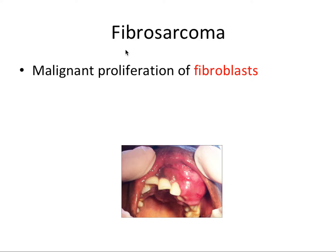So first, we have fibrosarcoma, and this is the malignant proliferation of fibroblasts. You'll notice that a lot of these connective tissue tumors, or lumps and bumps as I call them, look kind of similar, just on a spectrum of severity, some being smaller and some being larger. I'm not going to include pictures for all these lesions for that reason, but the most important thing to know for each of these malignant connective tissue tumors is the cell that's involved in the neoplasm, in terms of an exam like the Part 2 boards.